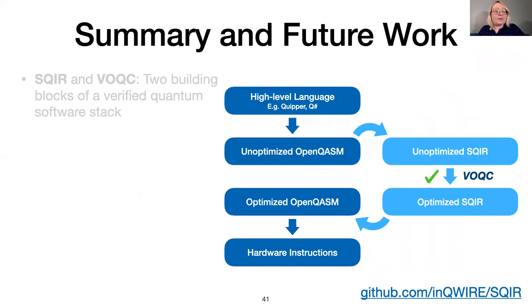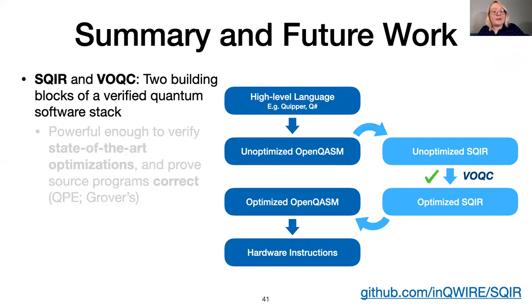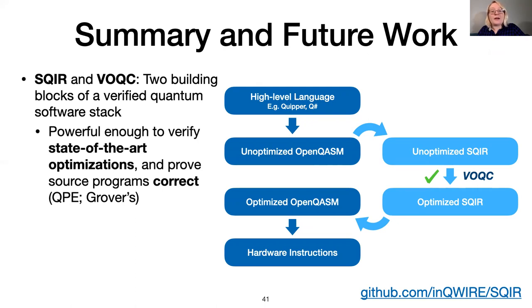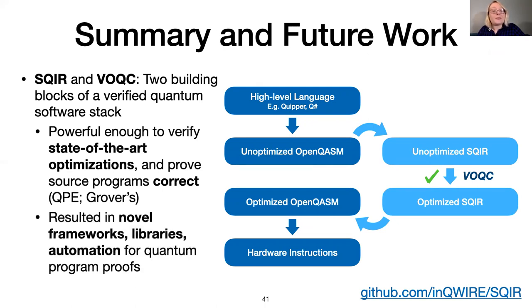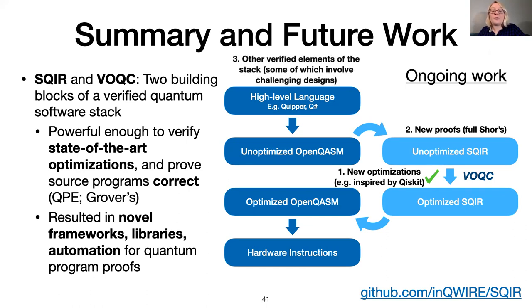In summary, we have presented SQUIRE, a small quantum intermediate representation, and VOQC, a verified optimizer for quantum circuits. Our VOQC framework is powerful enough to verify state-of-the-art optimizations. And our support for reasoning about SQUIRE programs has allowed us to verify classic quantum algorithms, like quantum phase estimation and Grover search. Future work includes implementing and verifying new optimizations, such as those available in current quantum programming frameworks like Qiskit, verifying larger and more interesting quantum algorithms like Shor's factoring algorithm, and verifying other parts of the software stack, such as compilation from high-level languages to circuits, or even quantum simulators. Our code is all available online. We encourage you to check it out. Thanks for listening.